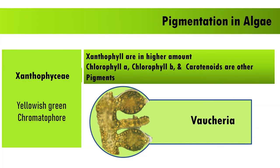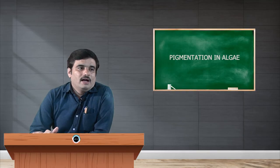Next, Xanthophyceae, generally called yellow-green algae, have chromatophores that are yellow-green in color. The yellow color is due to xanthophyll being present in higher amounts, while chlorophyll a, chlorophyll b, and carotenoids are also present in lesser amounts. The example is Vaucheria.